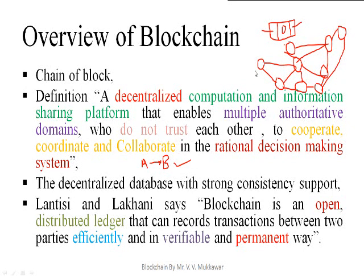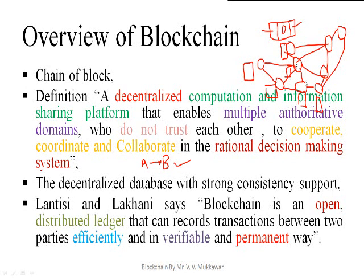In a decentralized network, whatever nodes are present — node 1, 2, 3, 4, 5, 6, 7, 8, 9 — they all have copies of all the transactions available with them. That is what the ledger is. The ledger is nothing but the document consisting of all previous transactions executed inside the network. All copies are available with each and every node present in the distributed network. As it is a decentralized database system, it does not depend on a central system — each node has the same value and can perform the same operations.